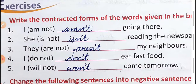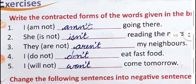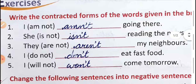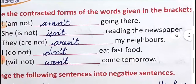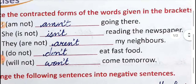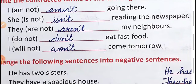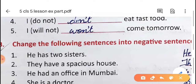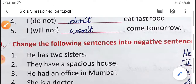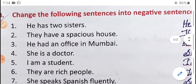Contracted forms means short forms. 'I am not going there' — the short form of 'am not' is 'amn't' (a-m-n-apostrophe-t). 'She is not reading the newspaper' — short form of 'is not' is 'isn't' (i-s-n-apostrophe-t). 'They are not my neighbors' — 'aren't' (a-r-e-n-apostrophe-t). 'I do not eat fast food' — 'don't' (d-o-n-apostrophe-t). 'I will not come tomorrow' — 'won't' (w-o-n-apostrophe-t). This one you have to learn nicely.